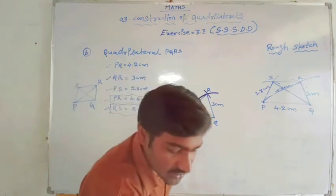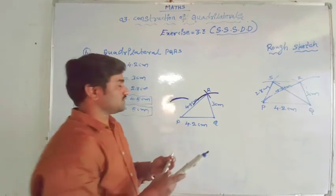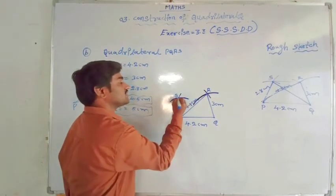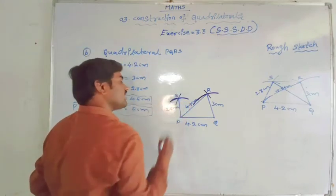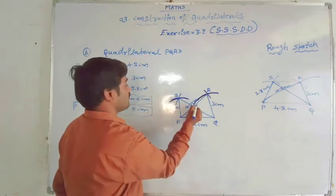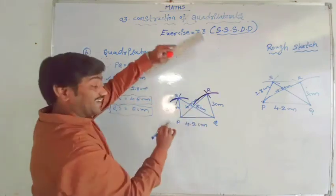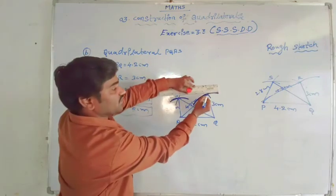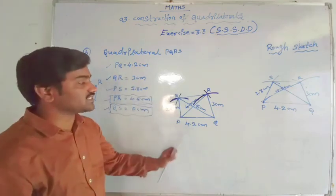QS equal to 5 cm: take 5 cm on the compass and keep it at Q, then draw an arc. The intersection of this arc with the PS arc gives the exact position of S. Join PS equal to 2.8 cm and QS equal to 5 cm. To make it a complete construction, since only 3 sides are given, we have to draw the additional 4th side. So our construction of quadrilateral PQRS is completed with the given measurements.